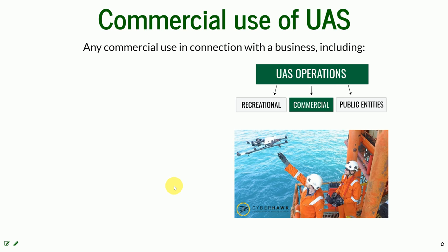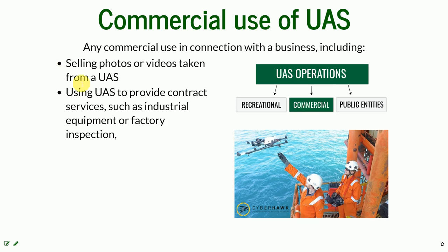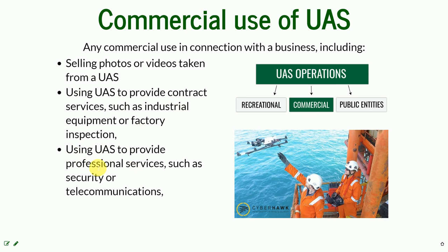Commercial use of UAS is the second highly regulated category. It includes any use in connection with a business that brings compensation — such as selling photos or videos taken from a UAS, providing contract services, monitoring industrial equipment, inspecting a factory, or providing professional services like security or telecommunications. Even carrying a Wi-Fi router on a UAS to provide services is considered commercial use.